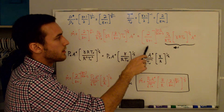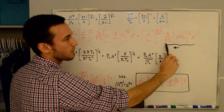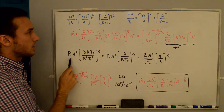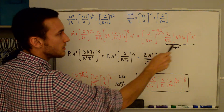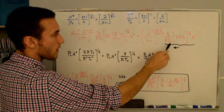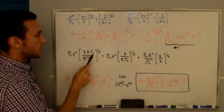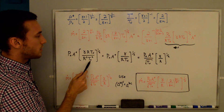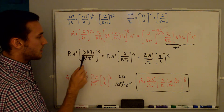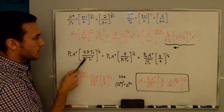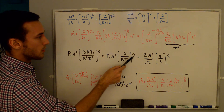Plugging in, we rearrange the full expression by taking P₀ A* out front and moving R and T₀ into the square root — squaring them to bring them inside. We get γ R T₀ in the numerator over R² T₀² inside the square root, so the R's cancel to give 1/R and the T₀'s cancel to give 1/T₀. Pulling √T₀ out gives P₀ A*/√T₀ times (γ/R)^(1/2) inside the brackets.